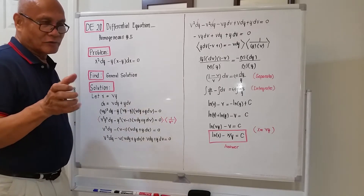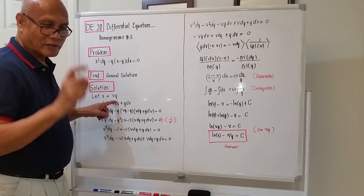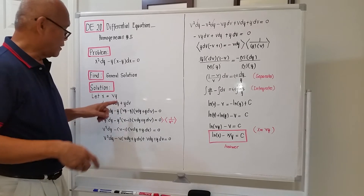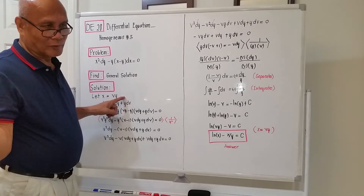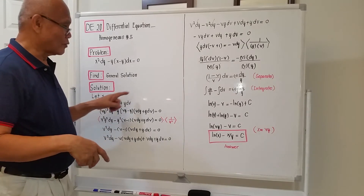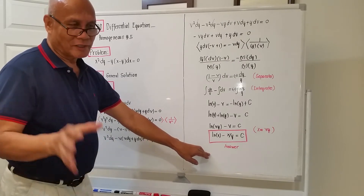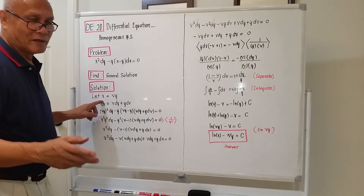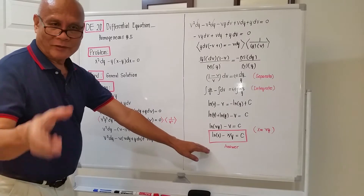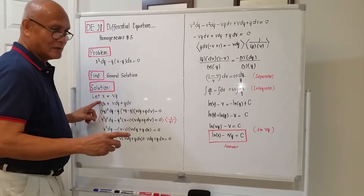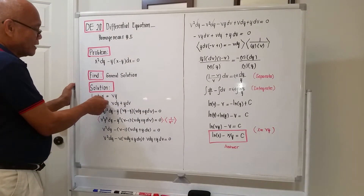For homogeneous equations, there are only two classes of substitution: either x equals vy, or y equals vx. For this example, I will choose x equal to vy. I already have a solution on my notebook using y equal to vx, and the final answer came out. Now I want to show you another solution by using x equal to vy — the answer should be the same.